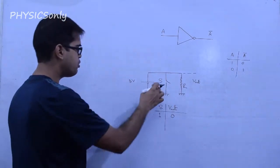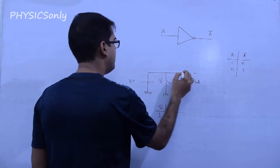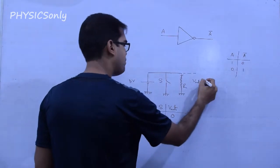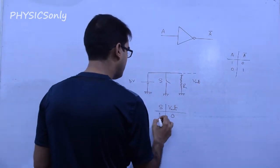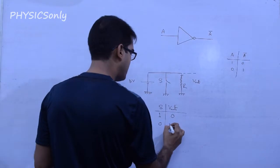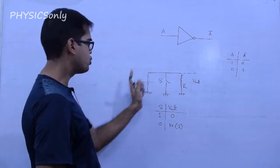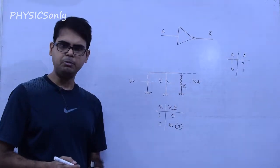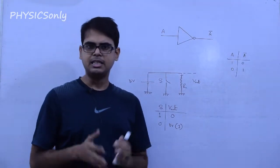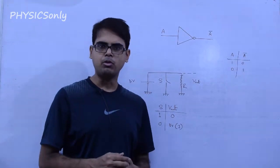Similarly, when we switch to cut-off, we get the main current drop, and we get Vout = 5V. So if the switch is OFF, then the input is 0, and we get 5V output, corresponding to logic 1. So we get the NOT gate behavior from this switch.